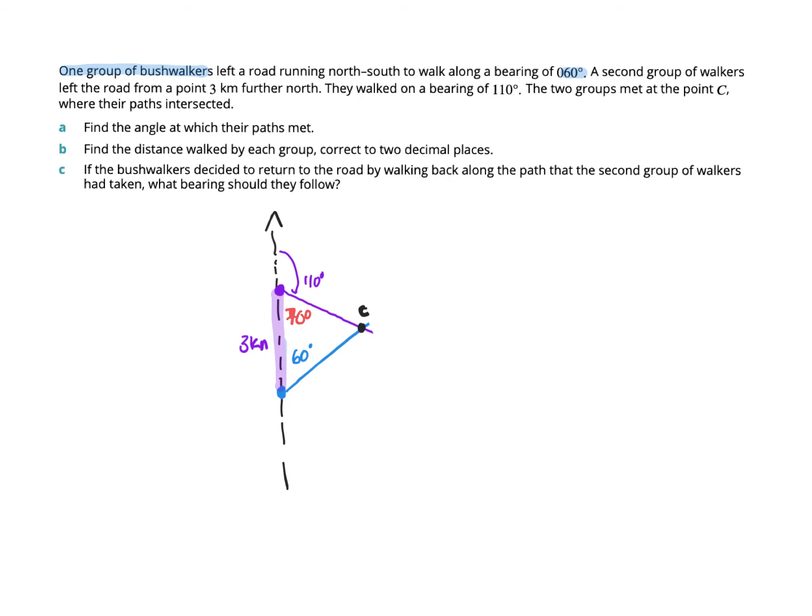Find the angle at which their paths meet. This is what we've got to find. And it's 50. Why is it 50? Because X equals 50 because they all have to add up. 180 minus 70 plus 60.